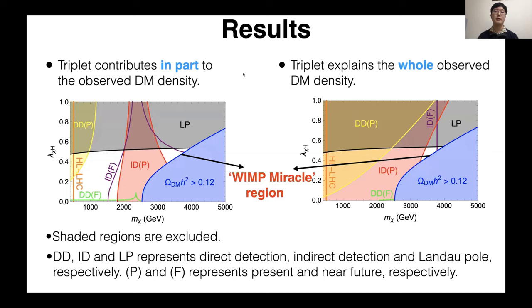The constraints mentioned above are summarized in these figures. The left panel corresponds to the case where triplet contributes in part to the observed dark matter density. And the right panel corresponds to the case where triplet explains the full dark matter density. Shaded regions are excluded at present experiments. And the DD, ID, and LP correspond to direct detection, indirect detection, and Landau pole respectively. The P and F represent present and near future respectively.